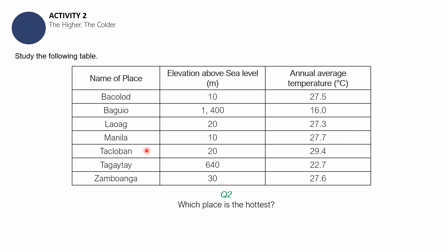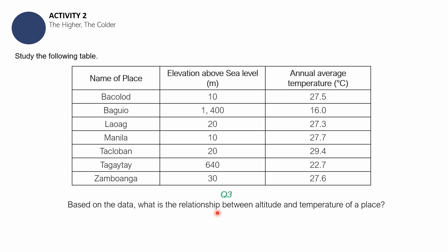Tacloban — we have some significant memories about it. Tacloban was hit by a very strong typhoon. We do not forget that, and we do not forget the people who suffered so much loss at that time. In this activity, Tacloban has the highest annual average temperature, so it is considered to be the hottest. The last question: the relationship between altitude and temperature is very apparent — the higher the altitude, the lower the temperature.